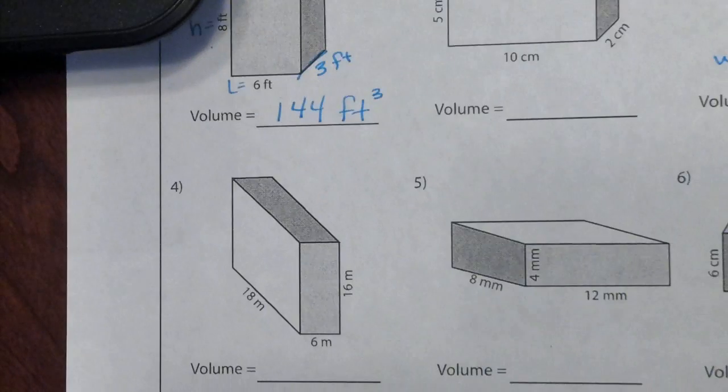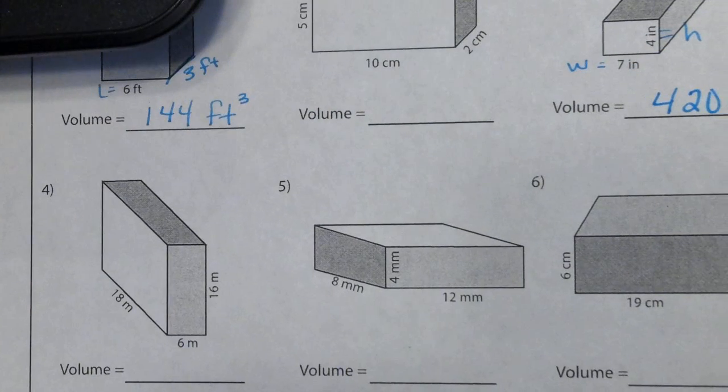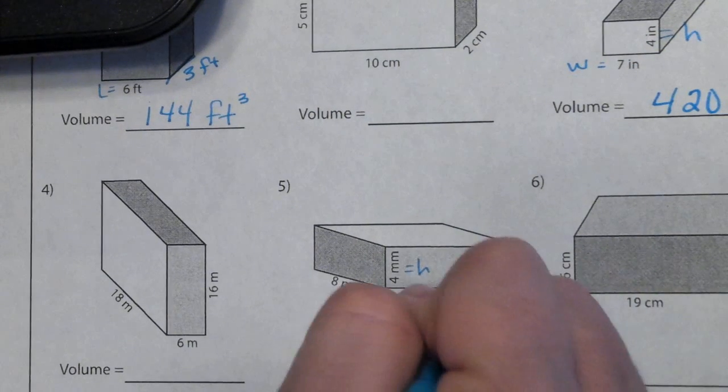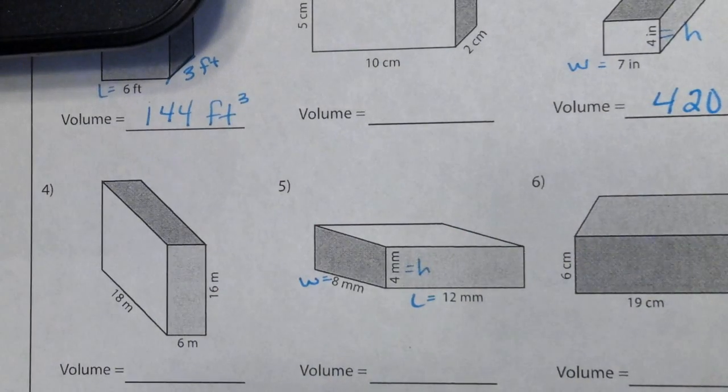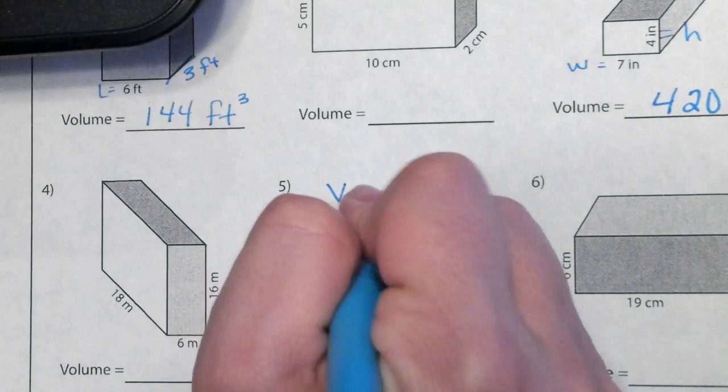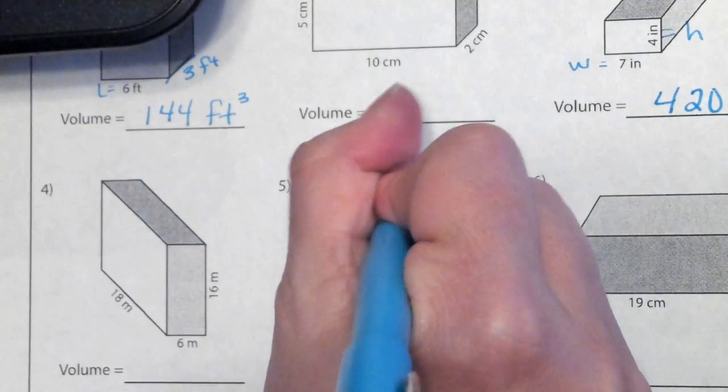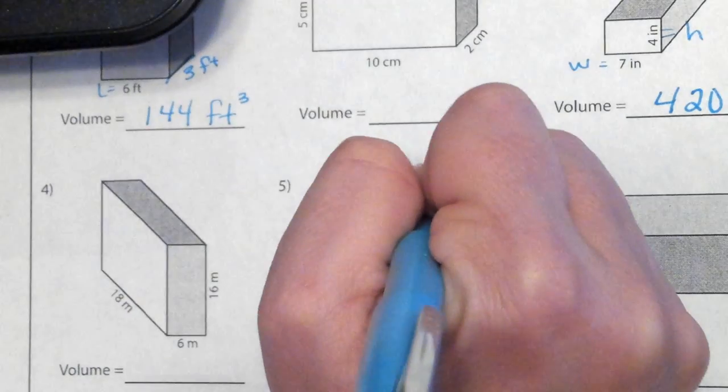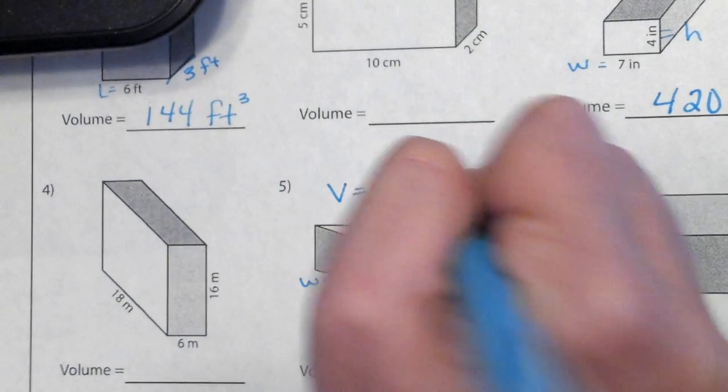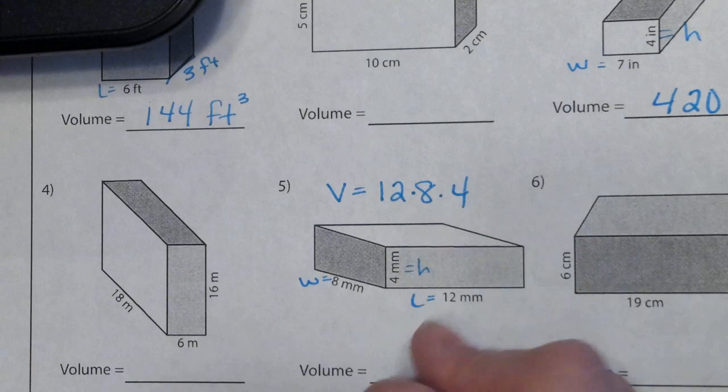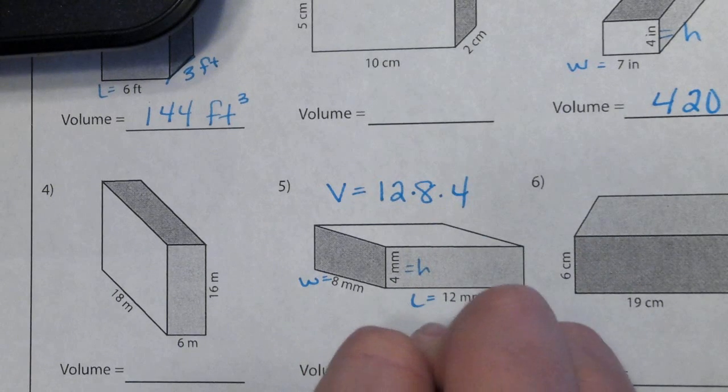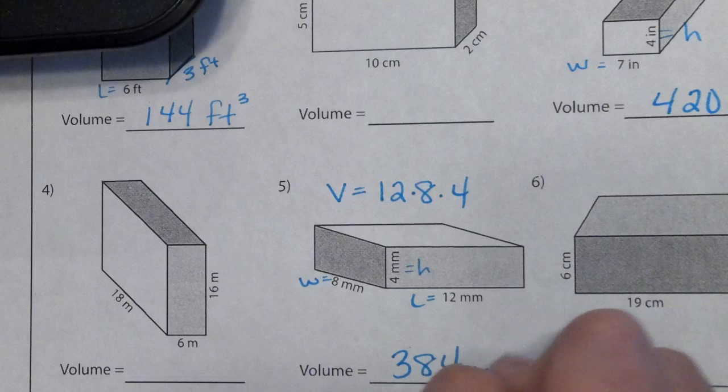Let's try number five. We have a height of four, a length of twelve, and a width of eight. So again, volume is the length times the width times the height. Twelve times eight is 96, times four is 384 millimeters cubed.